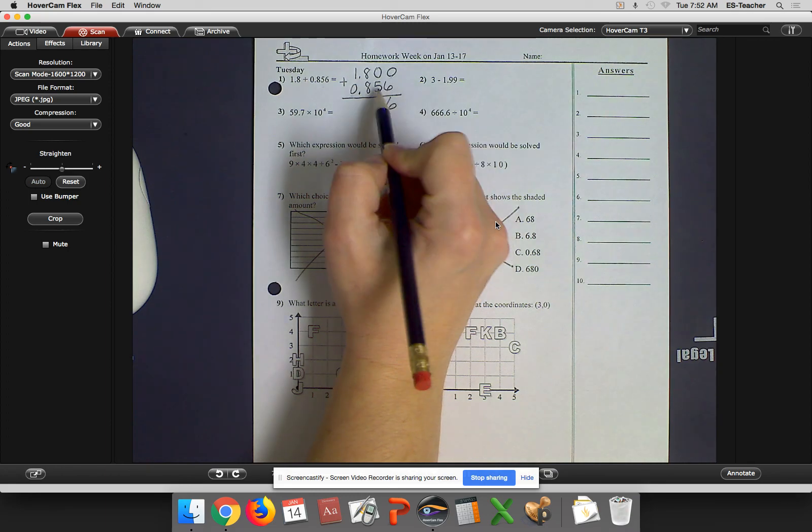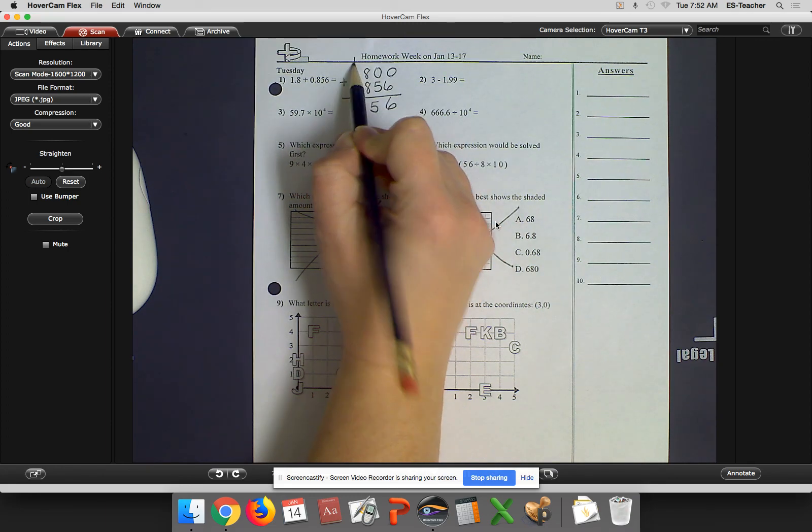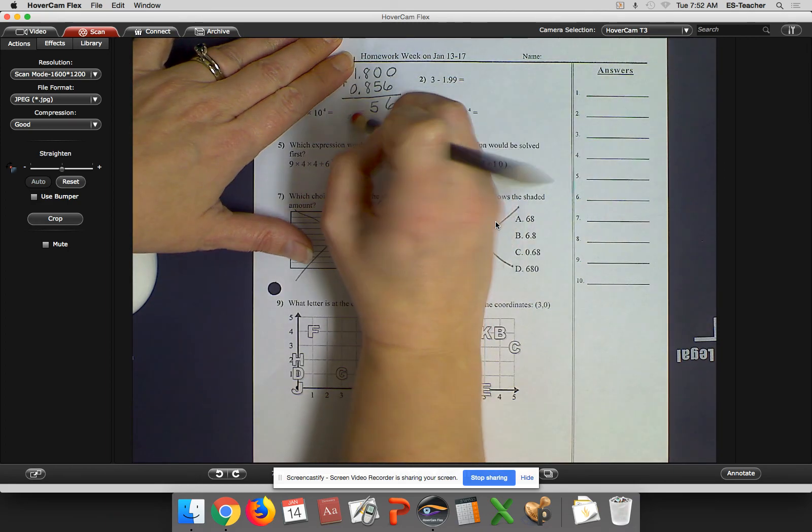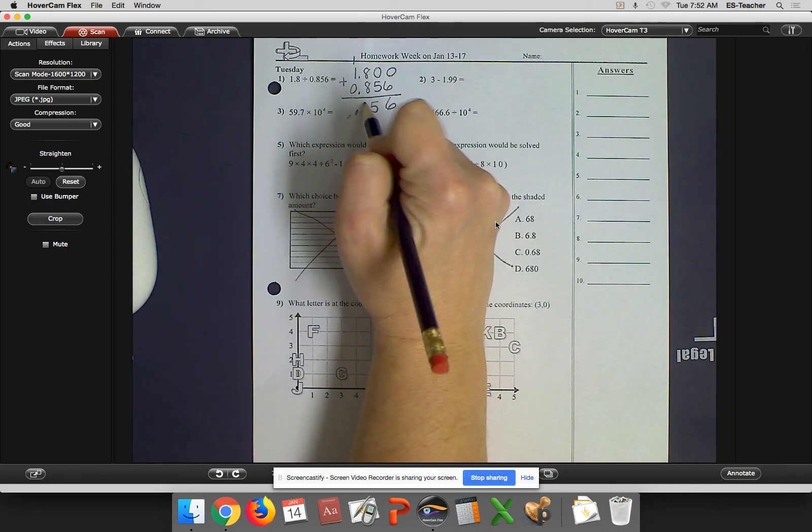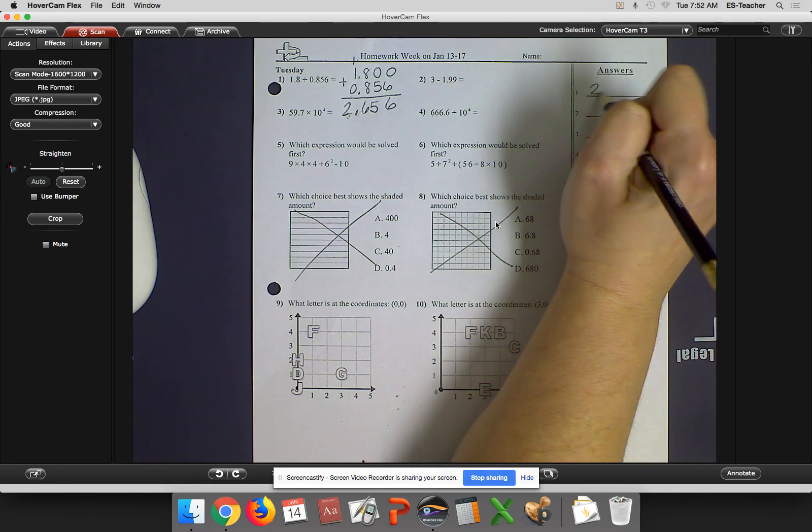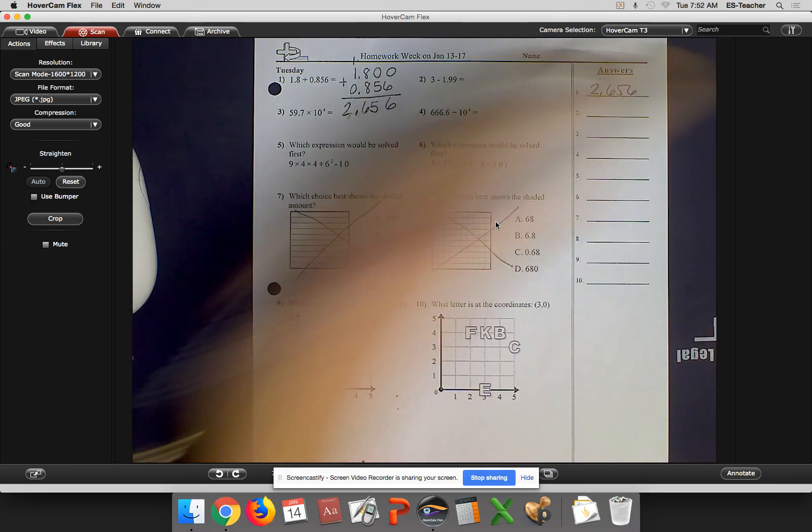0 plus 6 is 6, 5 plus 0 is 5, 8 plus 8 is 16, then my comma. This should be over a little bit. So bring down my decimal. That's a 6, 1, 2. So for number 1, the answer is 2 and 656 thousandths.